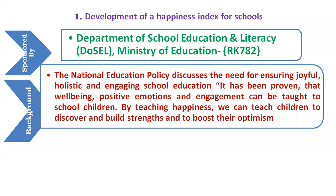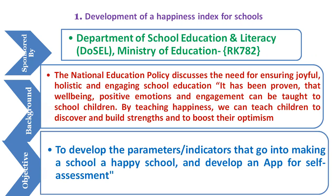It has been proven that well-being, positive emotions and engagement can be taught to school children. By teaching happiness, we can teach children to discover and build strengths and to boost their optimism. There can be several aspects of schooling that contribute to the happiness quotient of children, teachers and parents, such as more activity-based learning than routine chalk-on-board, and a reliably safe school.